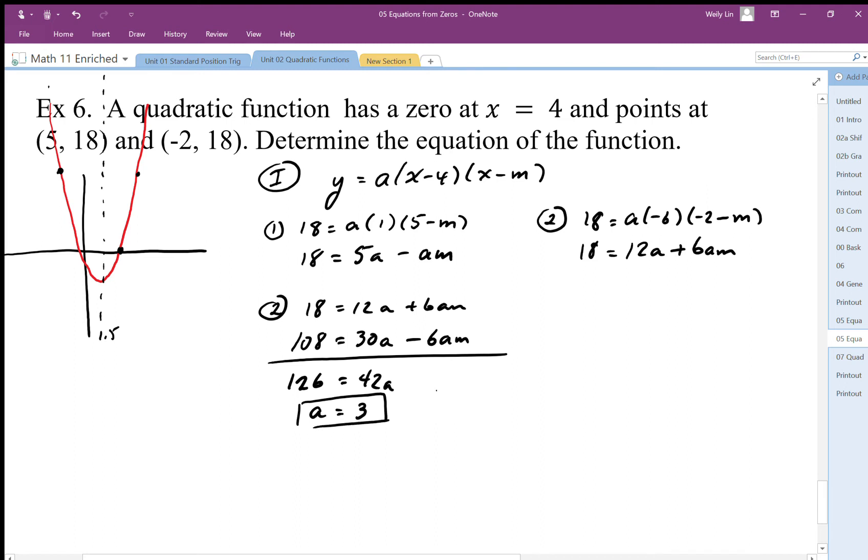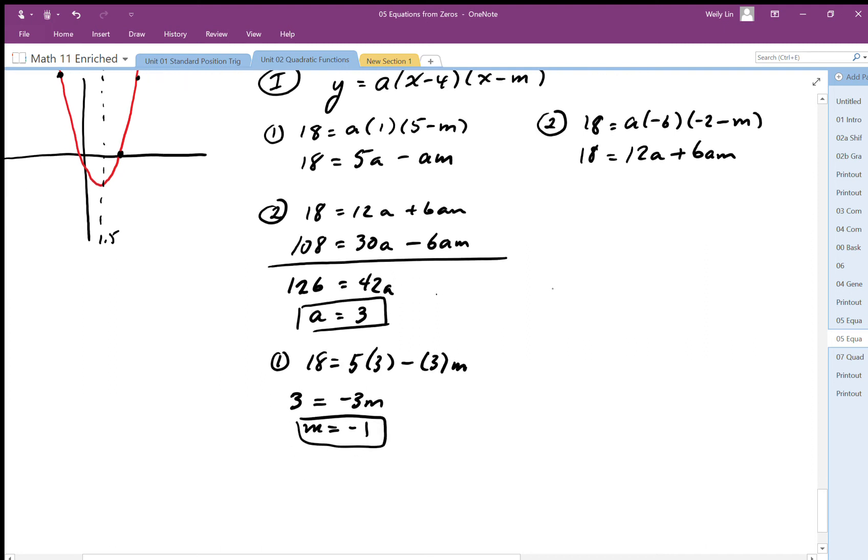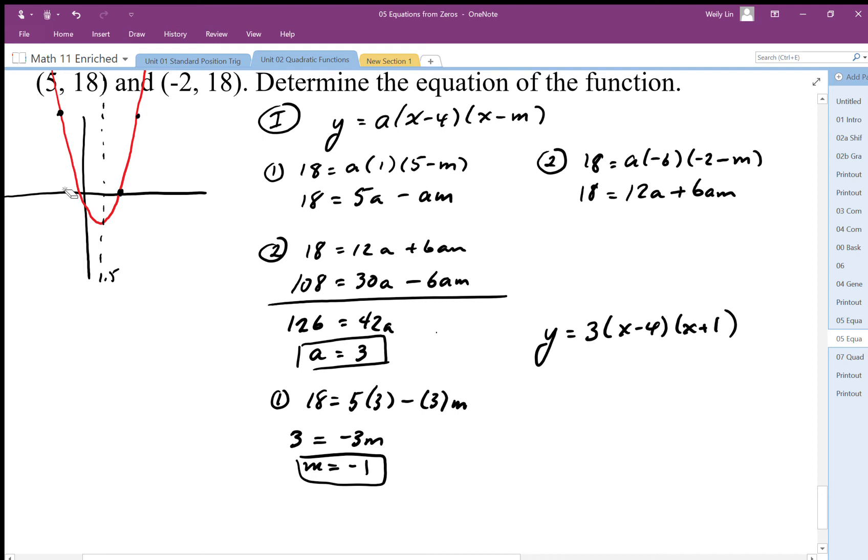a equals 3. I can back substitute to solve for m. I'm going to plug it back into equation one. I get 18 equals 5 times 3 minus 3 times m. Solving for m, I end up with 3 equals -3m, m equals -1. So there I solved my factored form: a is equal to 3, x minus 4, x plus 1. It looks like my picture is fairly accurate - that looks like it could possibly be at -1.